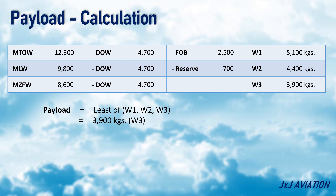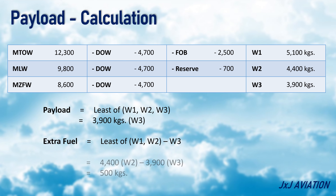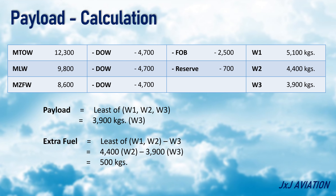We hope it was easy for you to understand the payload calculation. That wraps up our agenda for today, but hold on, curious brains — there is bonus content for you. If by chance W3 becomes your maximum payload, then you can carry extra fuel. To calculate how much extra fuel you can carry, you need to subtract W3 from the least value between W1 and W2.